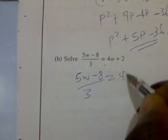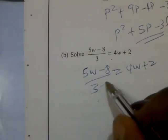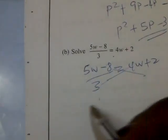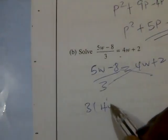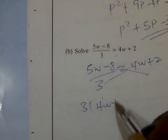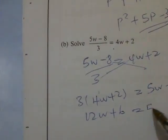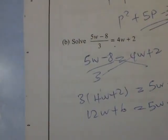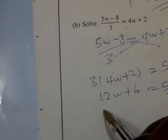Equal to 4w plus 2. Cross multiplying, you have 3 into (4w + 2) equal to 5w minus 8, that is 12w plus 6 equal to 5w minus 8.